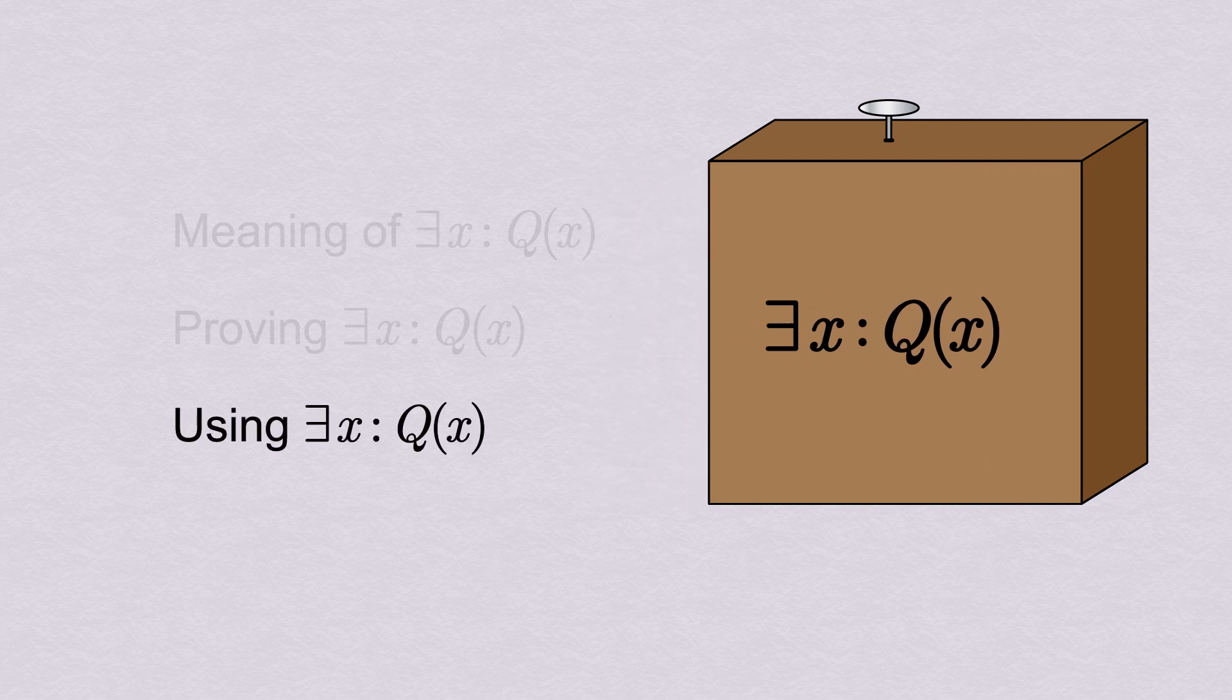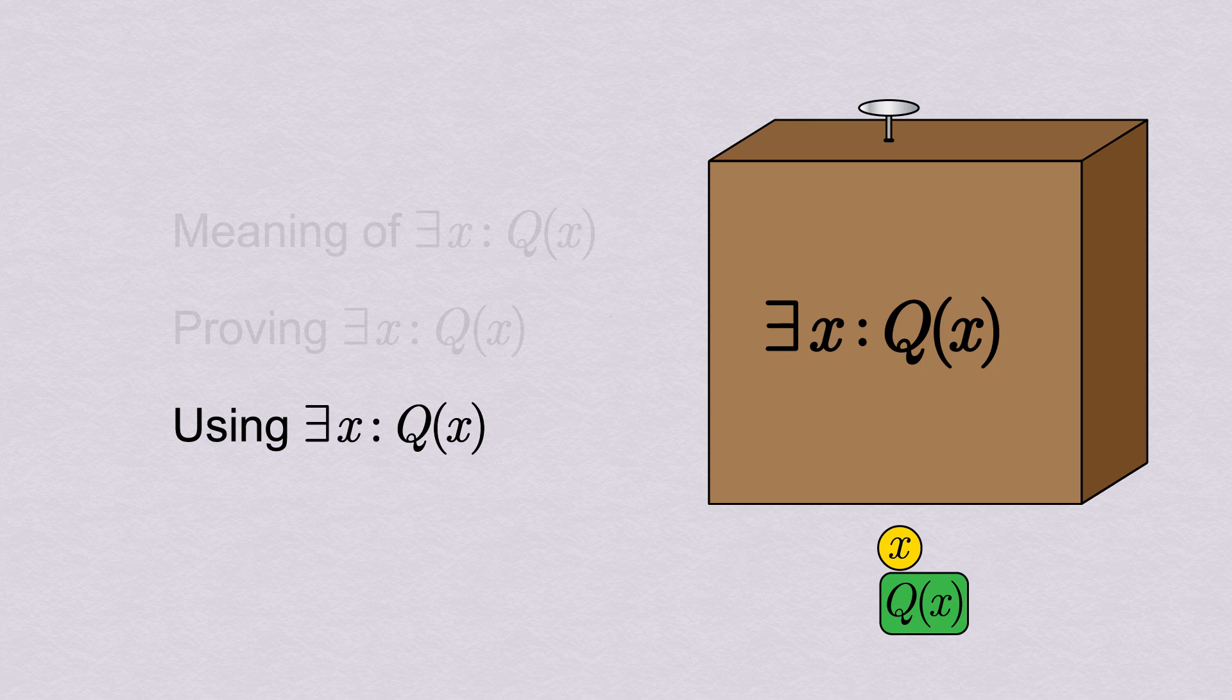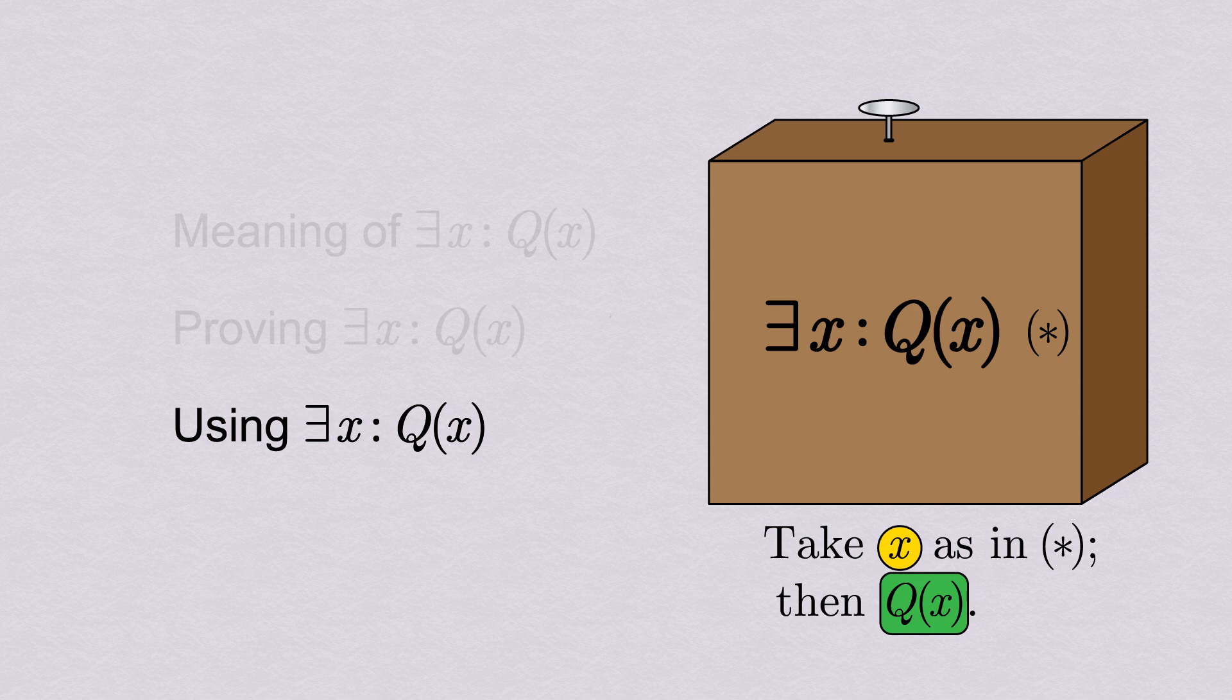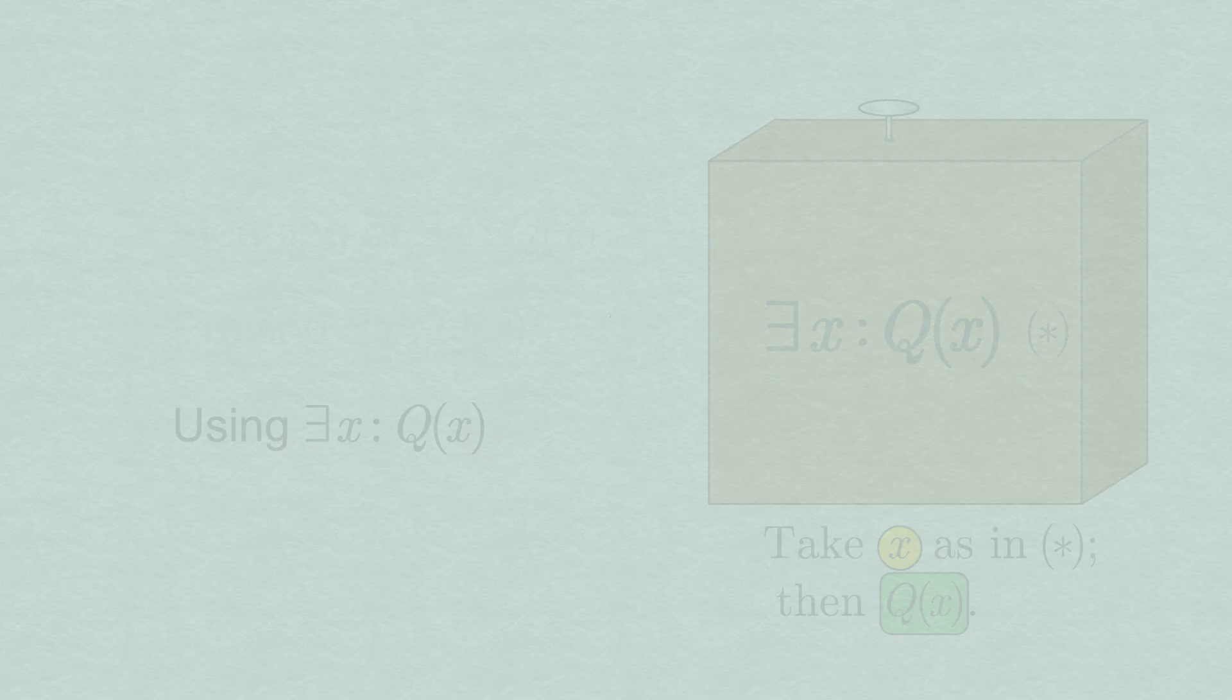The statement there exists x such that Q(x) is the easiest one to use, because we don't have to do anything on the outside of the box other than figuratively press the button. That outcome: x and Q(x). In a proof, we'll express this in words. Labeling the exists statement, we now passively take x as in star, and conclude that for this given value of x, Q(x) is true.